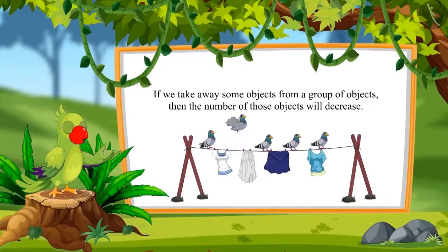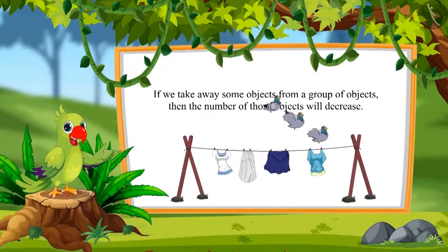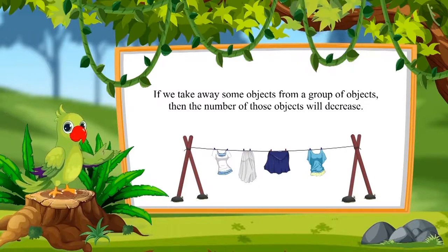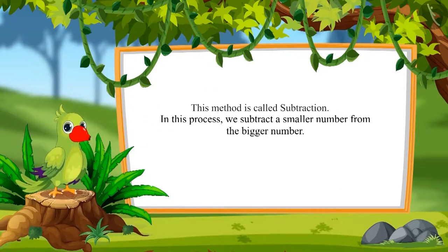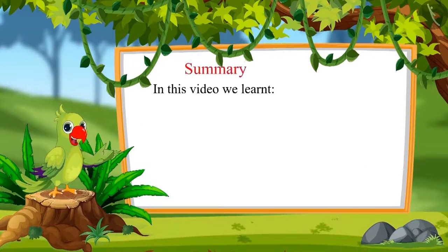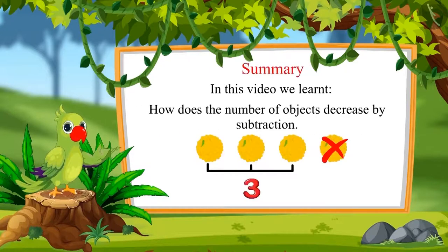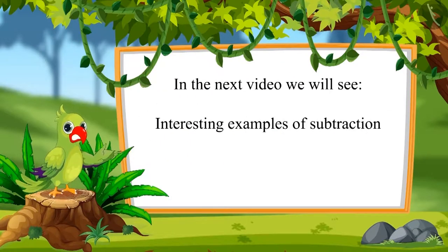In this way, if we take away some objects from a group of objects, then the number of that object decreases. This method is called subtraction. In this process, we generally subtract a smaller number from the bigger number. That's all for today. In this video, we learned how the number of objects decreases by subtraction. In the next video, we will see some more interesting examples. Till then, bye friends.